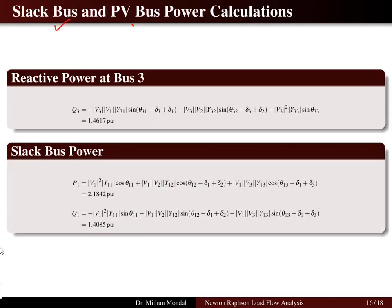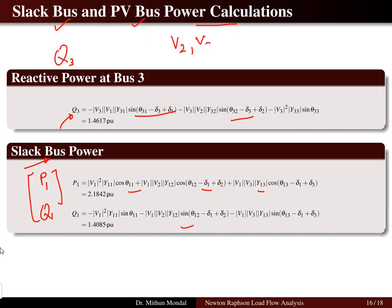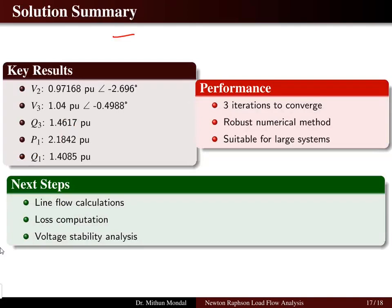Now that we have the bus voltages, we calculate the remaining quantities. For bus 3 (PV bus), we compute the reactive power using the power flow formulas. For the slack bus, we compute both real and active power. Once V2 and V3 are computed and V1 is given, we calculate the reactive and active power for all buses. The solution converges in three iterations with excellent numerical stability, making it suitable for large systems.